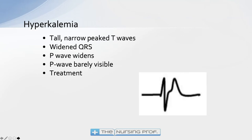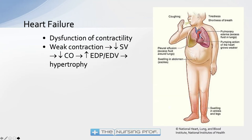Hyperkalemia is just the opposite — tall peaked T waves rather than small flattened T waves. We want to treat this and get the potassium level down because either too much or too little potassium can cause major dysrhythmias. We really need to be careful with that.